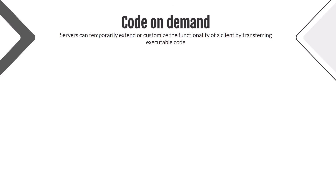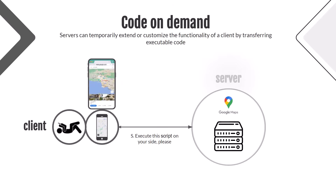The next constraint is code on demand. Servers can temporarily extend or customize the functionality of a client by transferring executable code. To be honest, I haven't found an example of it in Google API or other public APIs, so we are going to skip the detailed explanation for now. In general, the server sends some code and logic to the client side, and the client executes the script, displays valid data to the user, or sends appropriate data to the server. This constraint is optional — the server sends some code which a browser or app will execute.